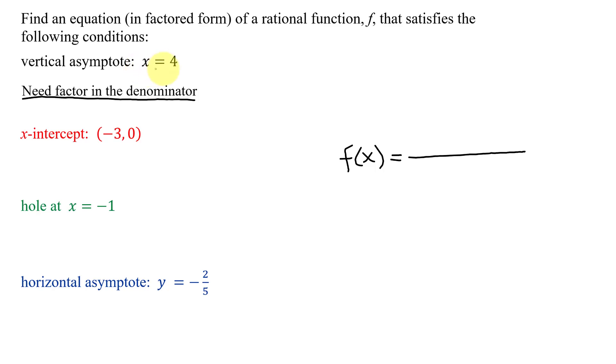What factor does x equals 4 come from? If I subtract 4 from both sides, I get x minus 4 equals 0. So the factor in the denominator is going to be x minus 4.